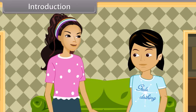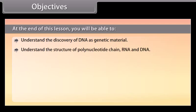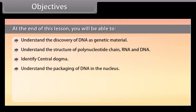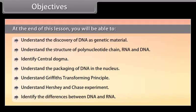Let me explain in detail. At the end of this lesson, you will be able to: understand the discovery of DNA as genetic material; understand the structure of a polynucleotide chain, RNA and DNA; identify the central dogma; understand the packaging of DNA in the nucleus; understand Griffith's transforming principle; understand the Hershey and Chase experiment; and identify the differences between DNA and RNA.